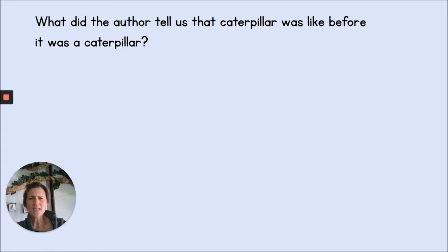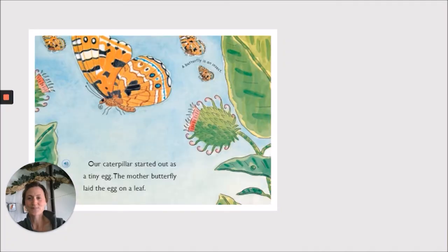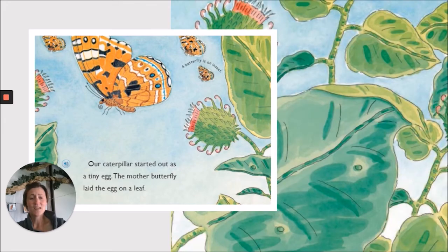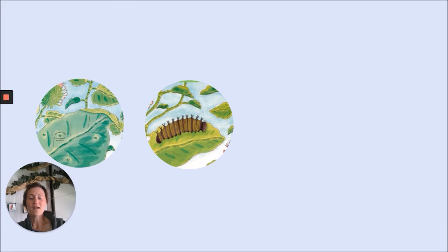What did the author tell us the caterpillar was like before it was a caterpillar? Let's look back and find out. Our caterpillar started out as a tiny egg. The mother butterfly laid the egg on a leaf. Here was an illustration showing us a lot of butterfly eggs — you can see how tiny they are. The mother butterfly lays eggs on a leaf that the caterpillar will eat, and those plants are called host plants. So first we had an egg, and then out of the egg hatched a caterpillar.